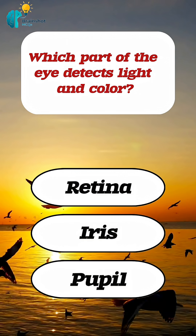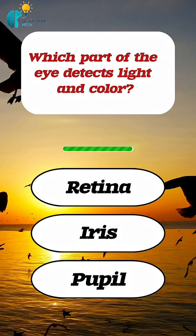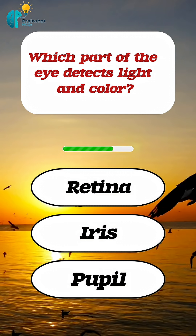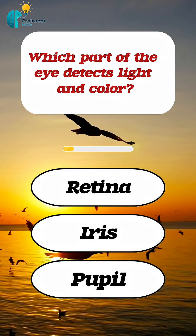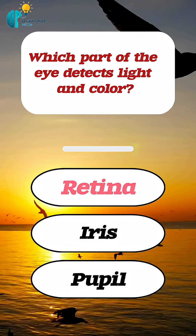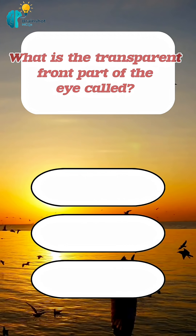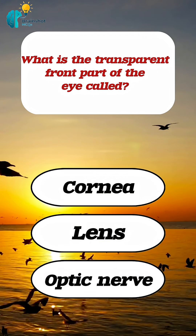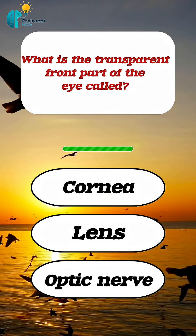Which part of the eye detects light and color? Correct. Answer: retina. What is the transparent front part of the eye called?